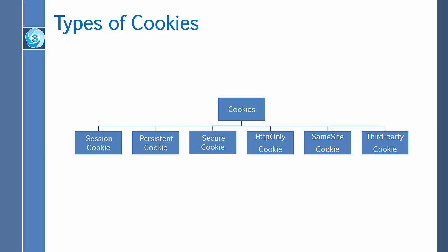They are mainly: session cookie, persistent cookie, secure cookie, HTTP-only cookie, same-site cookie, and third-party cookie. There are other types of cookies also, but I will focus only on these cookies as they are widely used in practice.